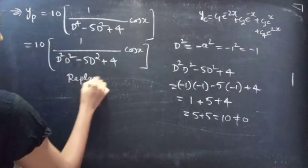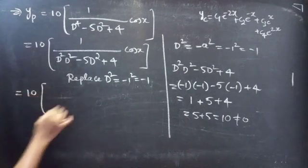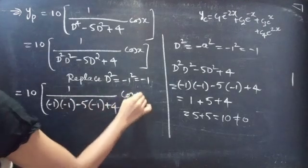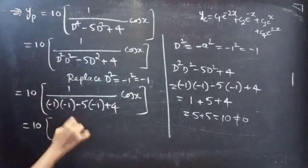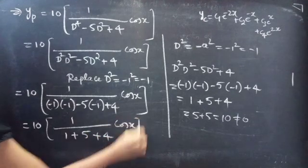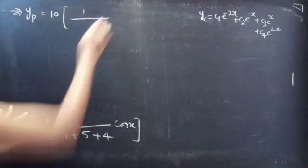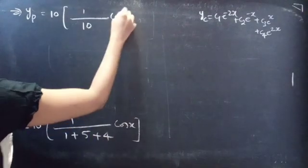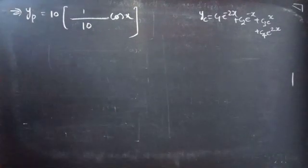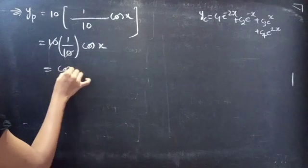Replacing D² by −1, yp becomes 10 · (1 / ((−1)(−1) − 5(−1) + 4)) · cos x = 10 · (1 / (1 + 5 + 4)) · cos x = 10 · (1/10) · cos x. The 10s cancel, so yp = cos x.